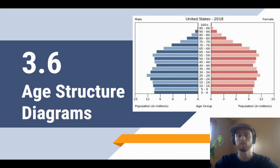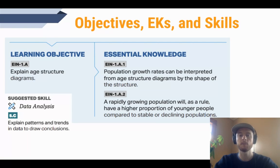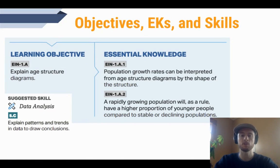We'll also talk about three different larger age cohorts that we'll be comparing today and what their sizes — which make up the shape of the diagram — will tell us about a country's growth. Today's objective is to be able to explain age structure diagrams. The essential knowledge is that the shape of an age structure diagram tells us the growth rate of the country, and that the more rapidly a population is growing, the higher proportion of young people it will have compared to stable or declining populations. The suggested science skill for today is data analysis, specifically explaining patterns and trends in data to draw conclusions.